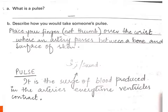How can you measure it? Place your finger on the wrist where an artery passes between a bone and the surface of the skin. If you place it here like this, you can take the pulse. Place your finger, not thumb, over the wrist where an artery passes between a bone and the surface of the skin. Hope you understand the lecture. Thank you.